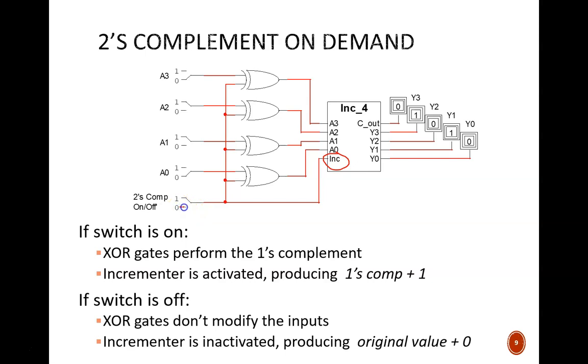Perhaps most insightful is to explore what happens when the control switch is low. With a signal of zero, there is no change through these exclusive OR gates. And then there is no change through the incrementer.